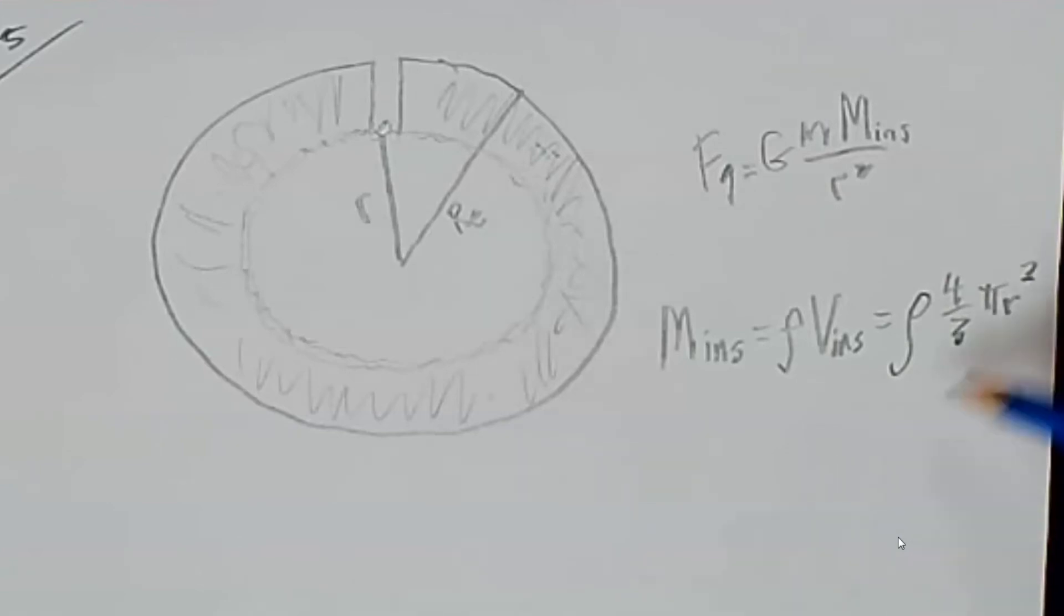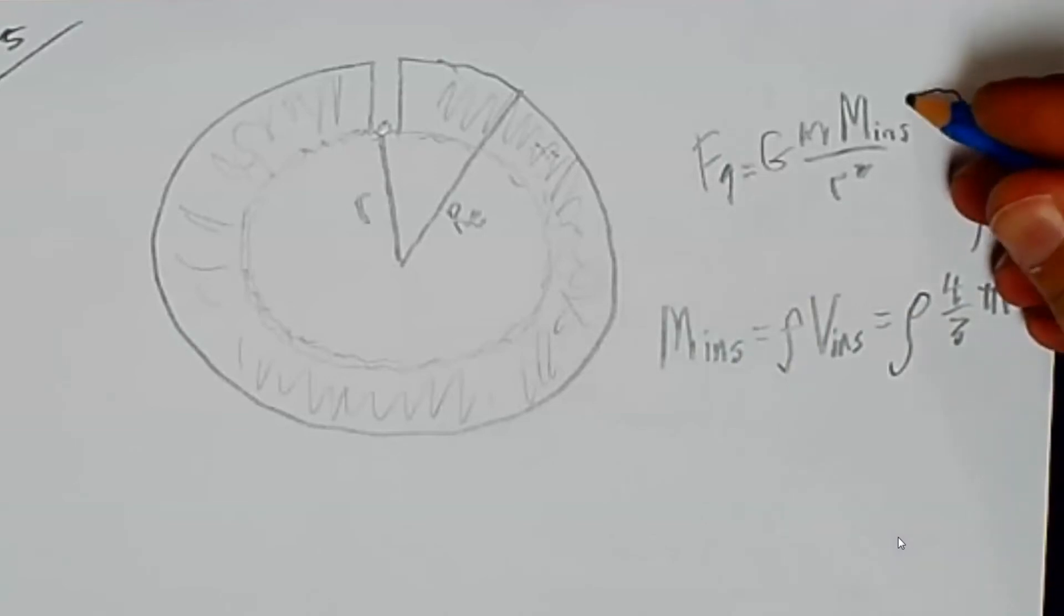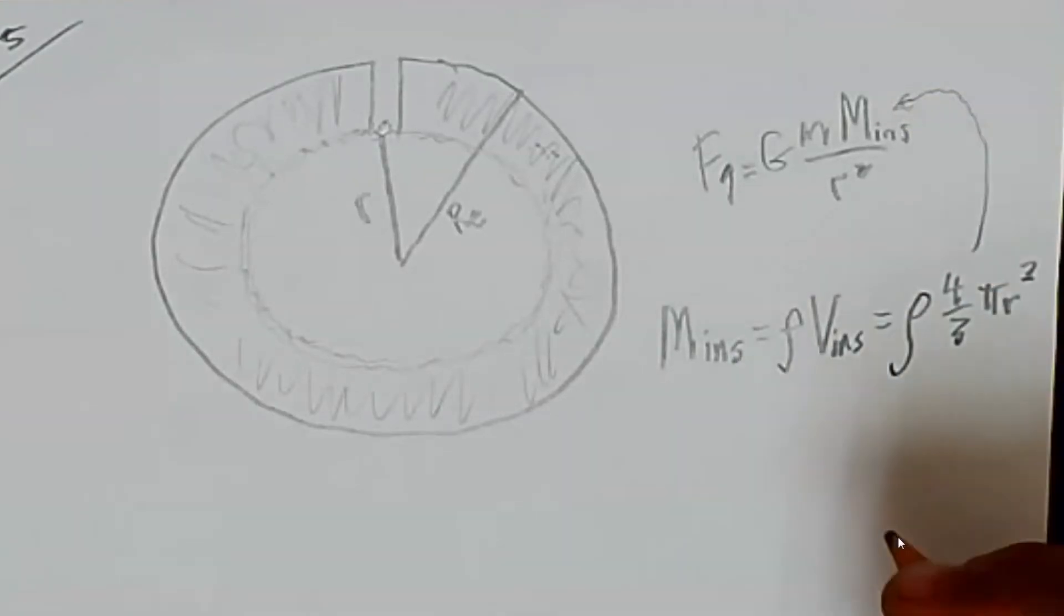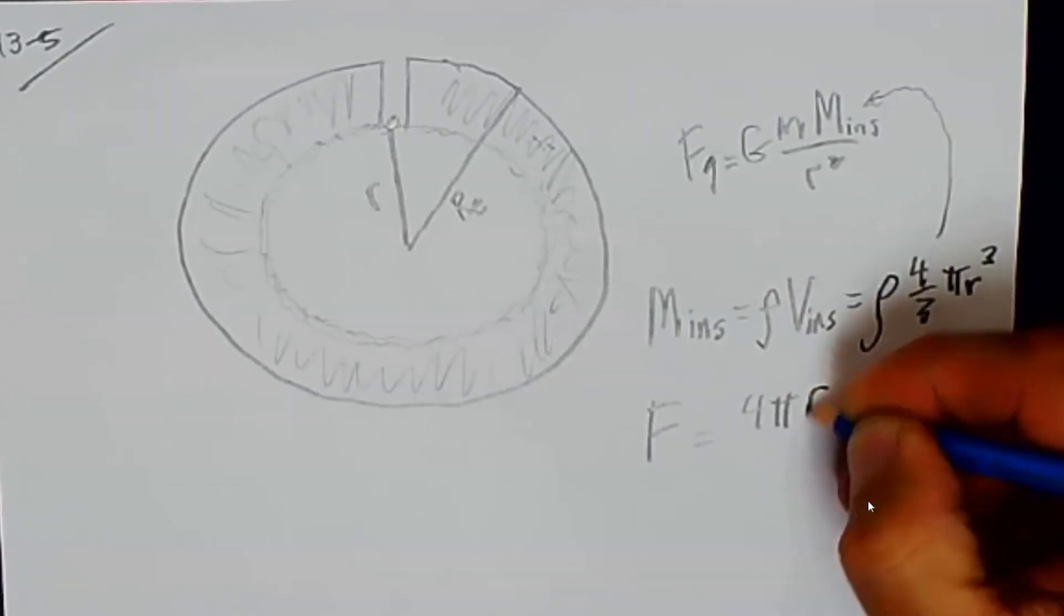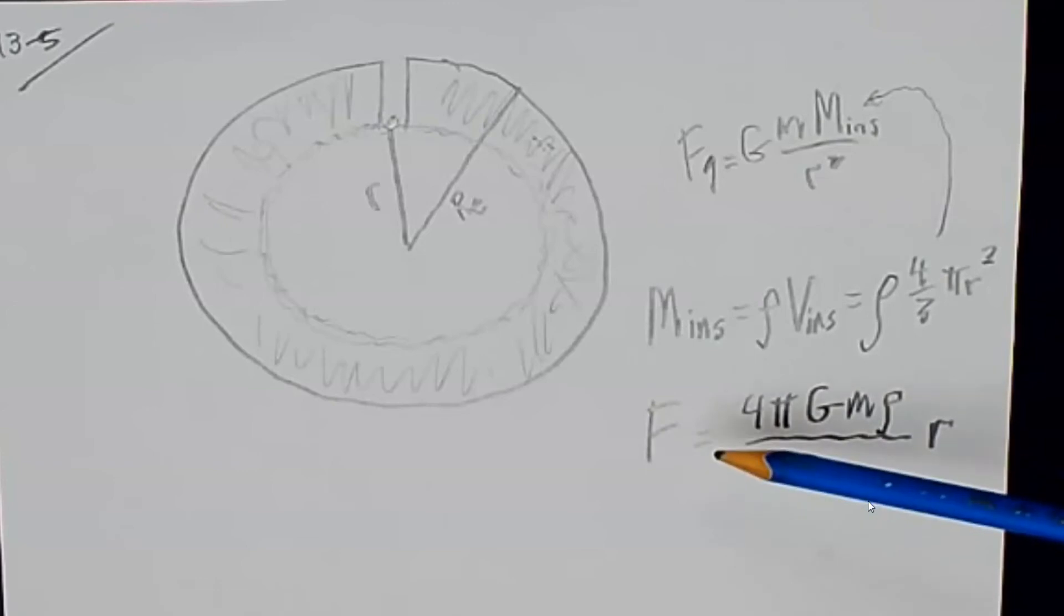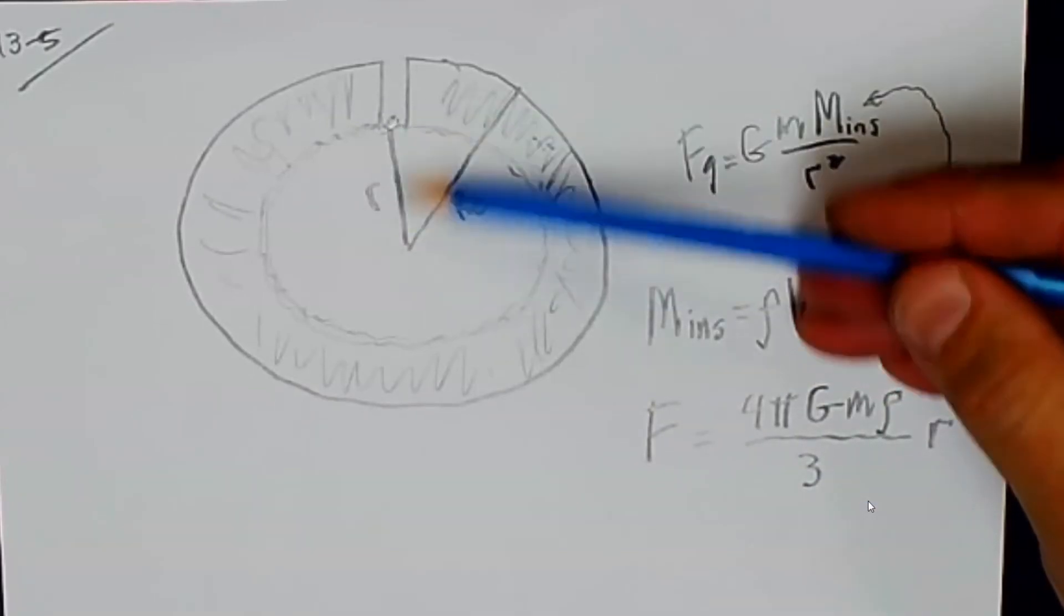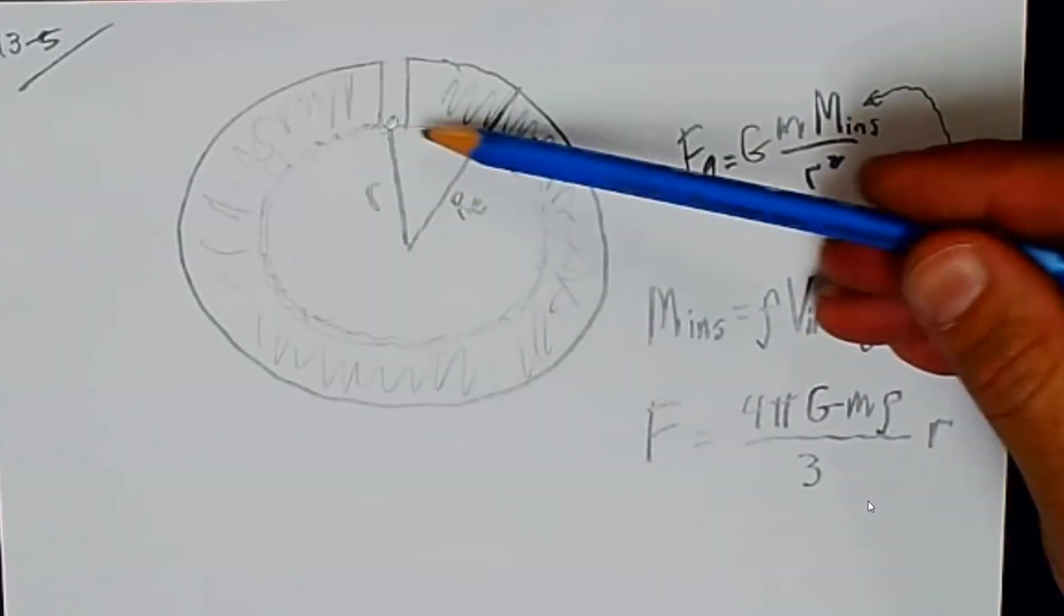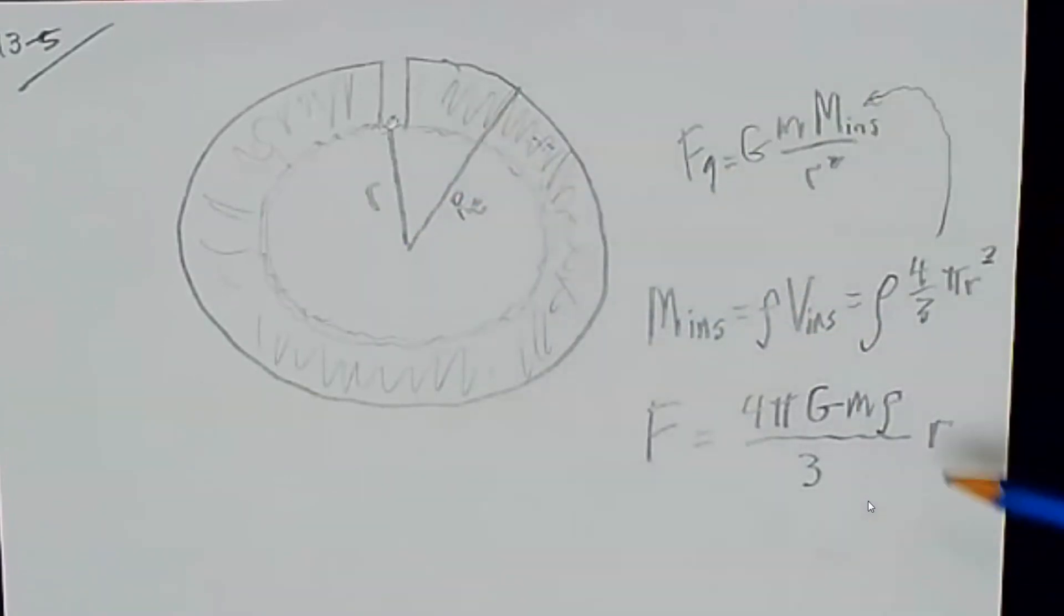All right, so I'm going to take this expression right here and substitute it in right there. And there, now this is numbers that I can probably have access to. I have to figure out what is the radius of that inside sphere that I'm located on the outside of, and then I have to know the density of the planet and assume uniform density.